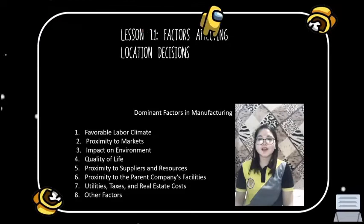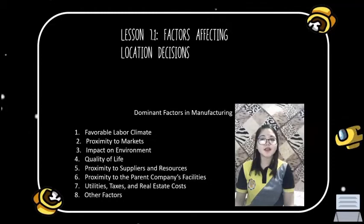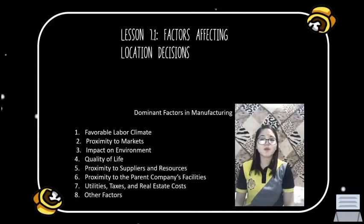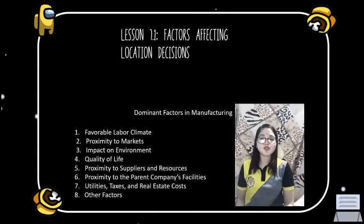Dominant factors are those derived from competitive priorities — cost, quality, time, and flexibility — and have a particularly strong impact on sales or cost. Secondary factors are also important, but management may downplay or even ignore some of them if other factors are more important. The following seven groups of factors dominate the decisions firms, including BMW, make about the location of new manufacturing plants or distribution centers.